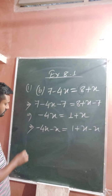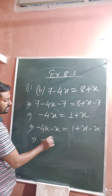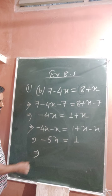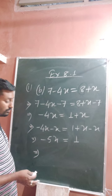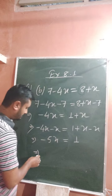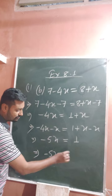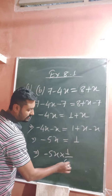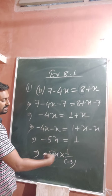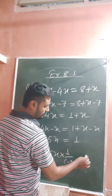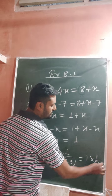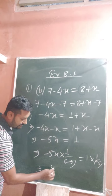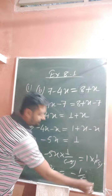So minus 4x minus x becomes minus 5x, and on the right side x minus x cancels, leaving 1. Your target is to keep only x on the left hand side, so you multiply both sides by 1 over minus 5. Minus 5 cancels, giving x equals 1 over minus 5, which is minus 1 by 5.